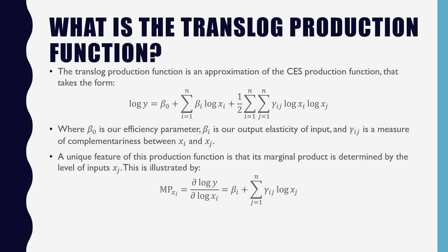A unique feature of this production function is that its marginal product is determined by the inputs of xj. This is illustrated by the partial derivative of log y with respect to log xi, which equals beta i, our output elasticity, plus the summation of gamma ij times log xj, which is all of the same inputs.